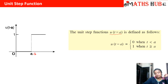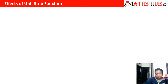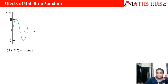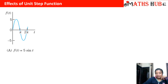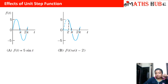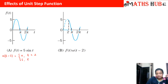Now let us see what is the effect of a unit step function when we multiply it along with any other function. The first graph shows f(t) equal to 5 sin(t), where 5 is the amplitude and it is a regular sine curve intersecting at 0, π, and 2π. Now what happens when we multiply this function with the unit step function u(t minus 2)? We know that u(t minus 2) is 0 whenever t is less than 2, and 1 whenever t is greater than 2.